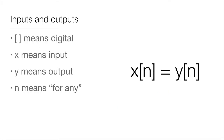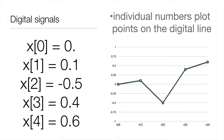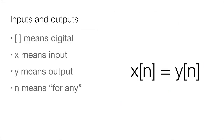Square brackets mean digital. When you see square brackets in mathematical equations, we're talking about a digital equation. X means input. Y means output. In this case we have a very simple expression — a very simple mathematical equation that says our input is equal to our output. That's what this equation is telling you. N effectively means 'for any.' So we're trying to find an expression for any input equal to the output. This is a very simple digital filter that does nothing.